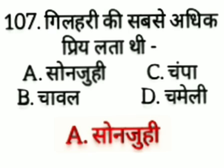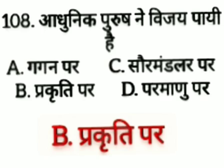Aadhunik purush ne vijay pahi hai — option A: gagan par, option B: prakruti par, option C: sauramandal par, option D: paramanu par. The answer is option B, prakruti par.